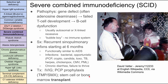Next is severe combined immunodeficiency, SCID. The pathophysiology is a gene defect — often adenosine deaminase deficiency — that leads to failed T cell development, which then leads to failed B cell function. This can be autosomal recessive or X-linked recessive. Think of Bubble Boy as your mental image: no immune system, needing protection from germs at all times. Symptoms include recurrent sinopulmonary infections starting at six months, when mom's immunity fades. They get bacterial and opportunistic infections like PCP, Crypto, Candida, Toxoplasmosis, TB, Herpes, Chickenpox, CMV, and PML.